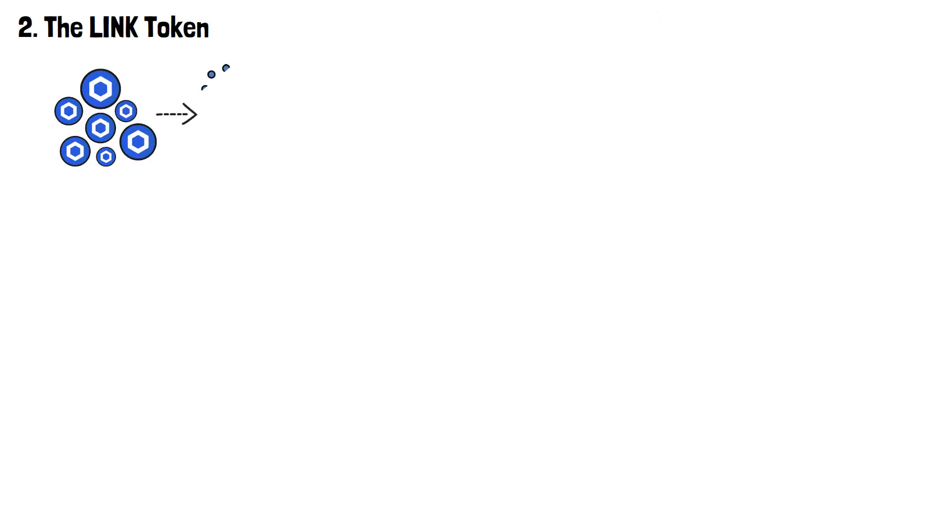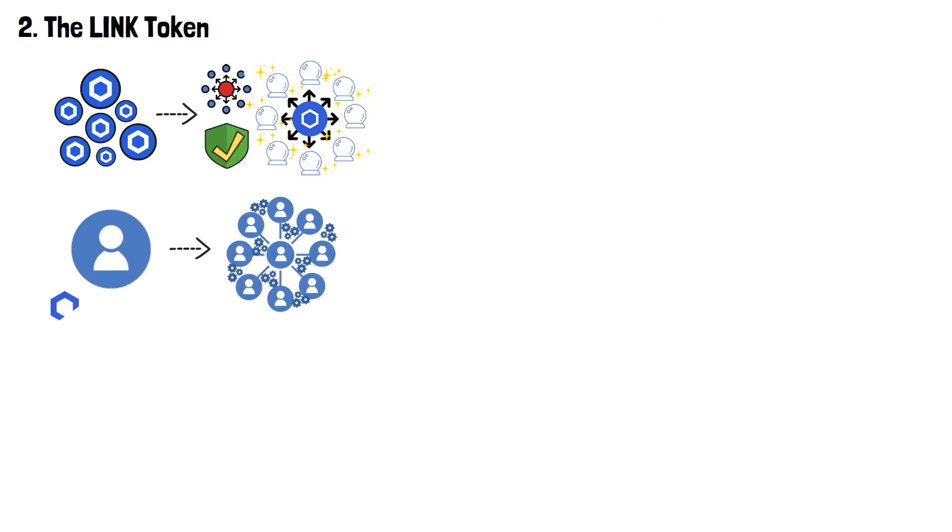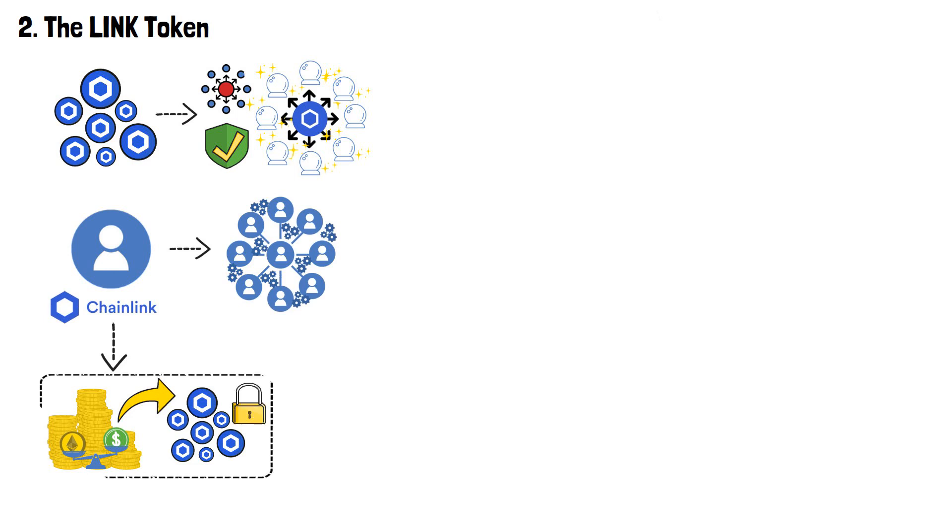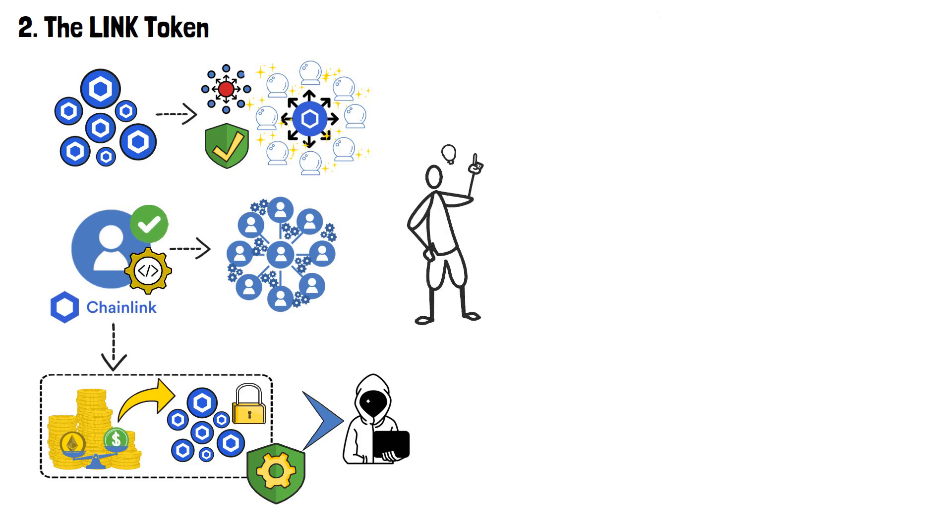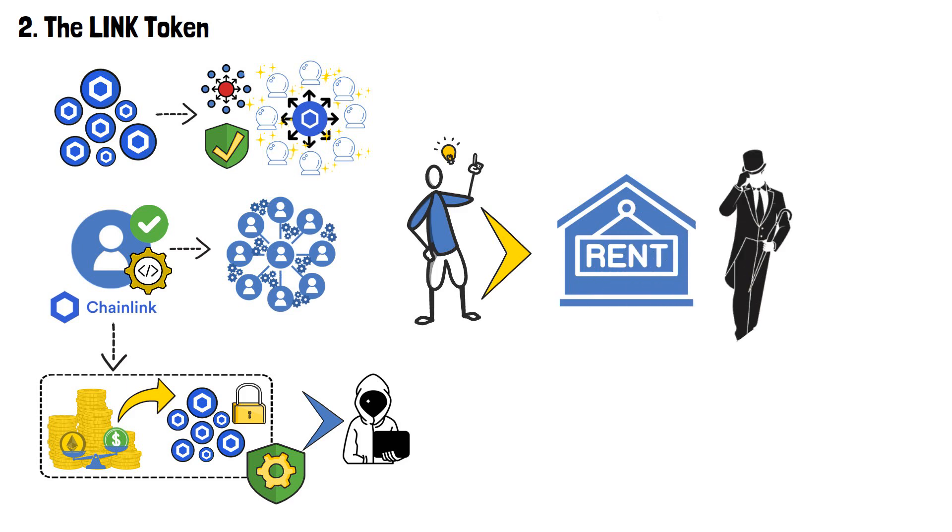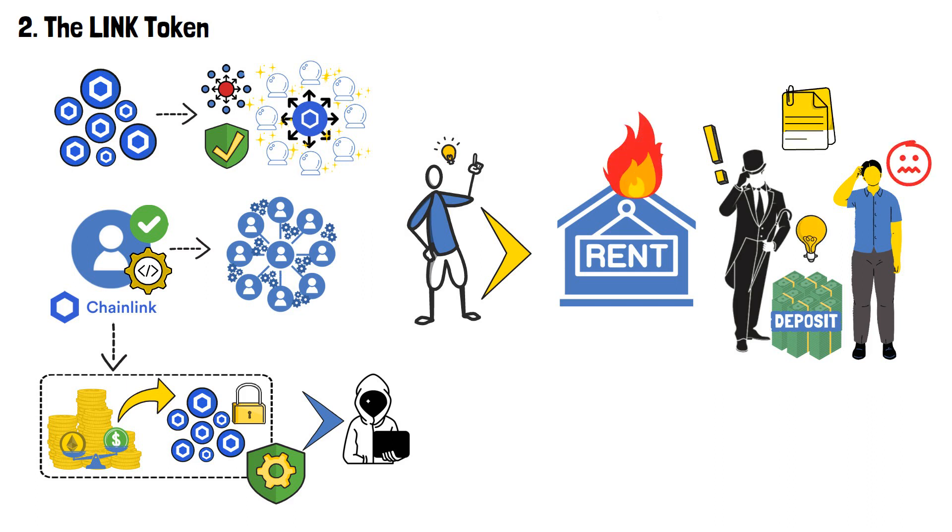Furthermore, LINK tokens contribute to the decentralization and security of the Chainlink network. To become a node operator and participate in the ecosystem, individuals need to stake a certain amount of LINK tokens as collateral. This requirement acts as a form of security deposit, deterring malicious behavior and ensuring that node operators have skin in the game. Let's use a simple analogy. When renting out an apartment, the landlord will expect the potential tenant to pay them a deposit. Its purpose is simple. To deter the tenant from damaging the property and to follow the contract that both parties sign. It's the same with LINK tokens and becoming a node operator. A deposit keeps them from abusing the system on which the entire network relies.